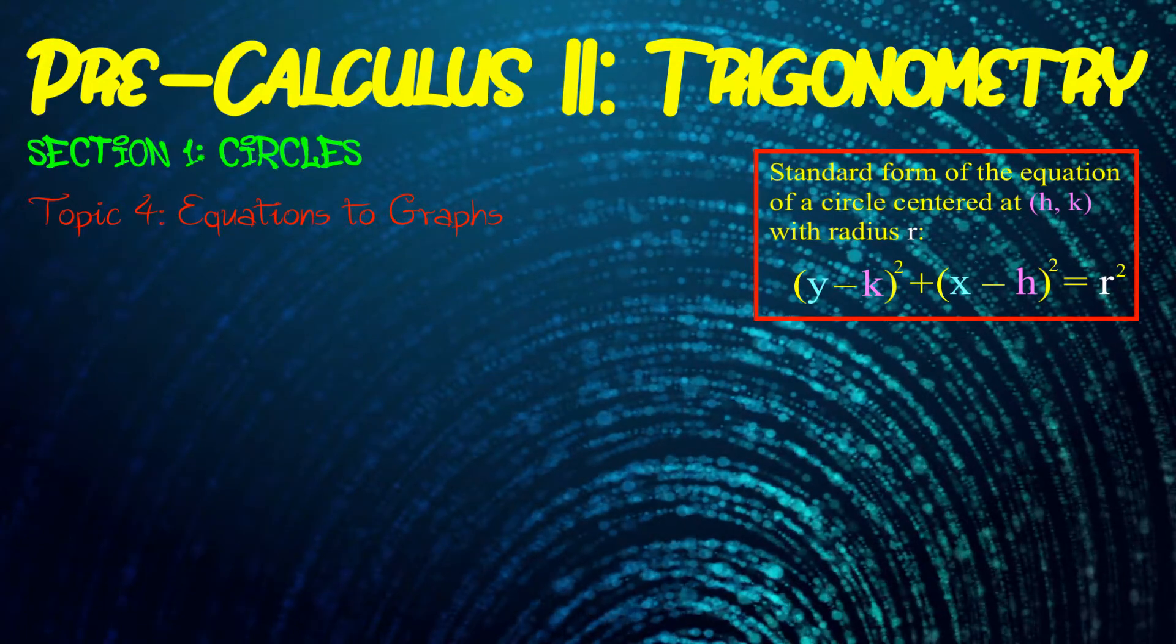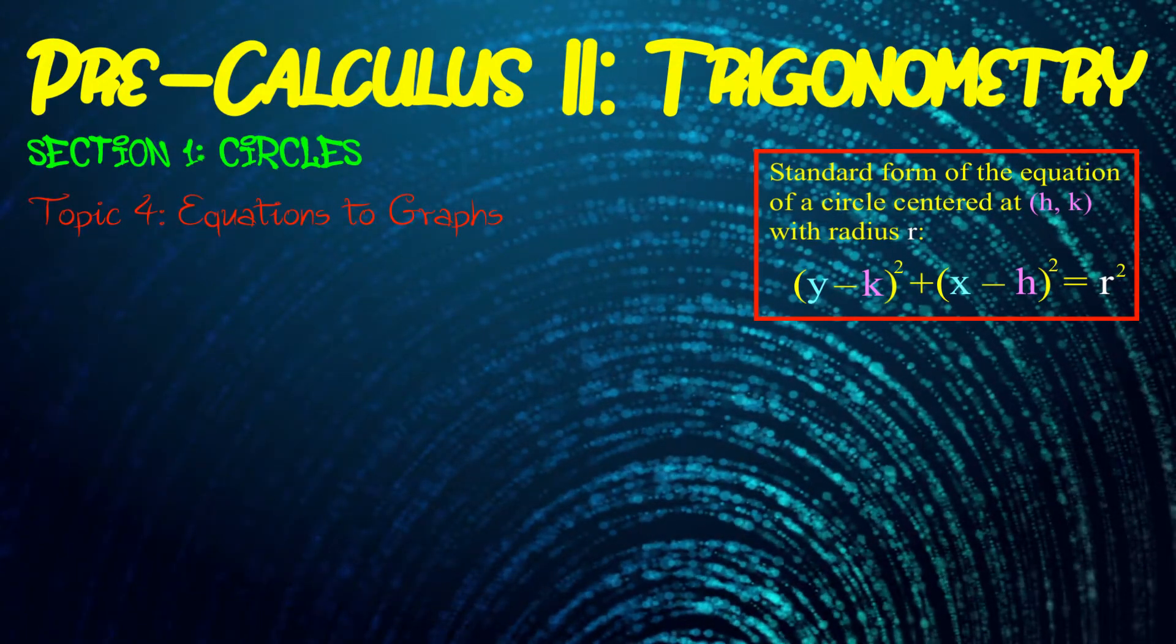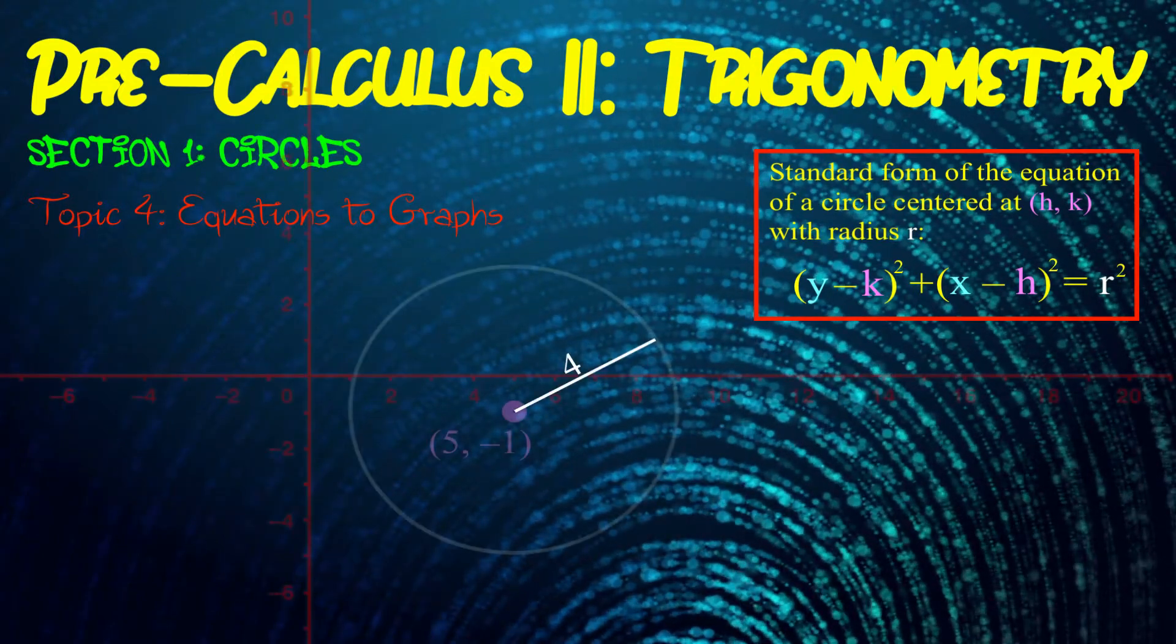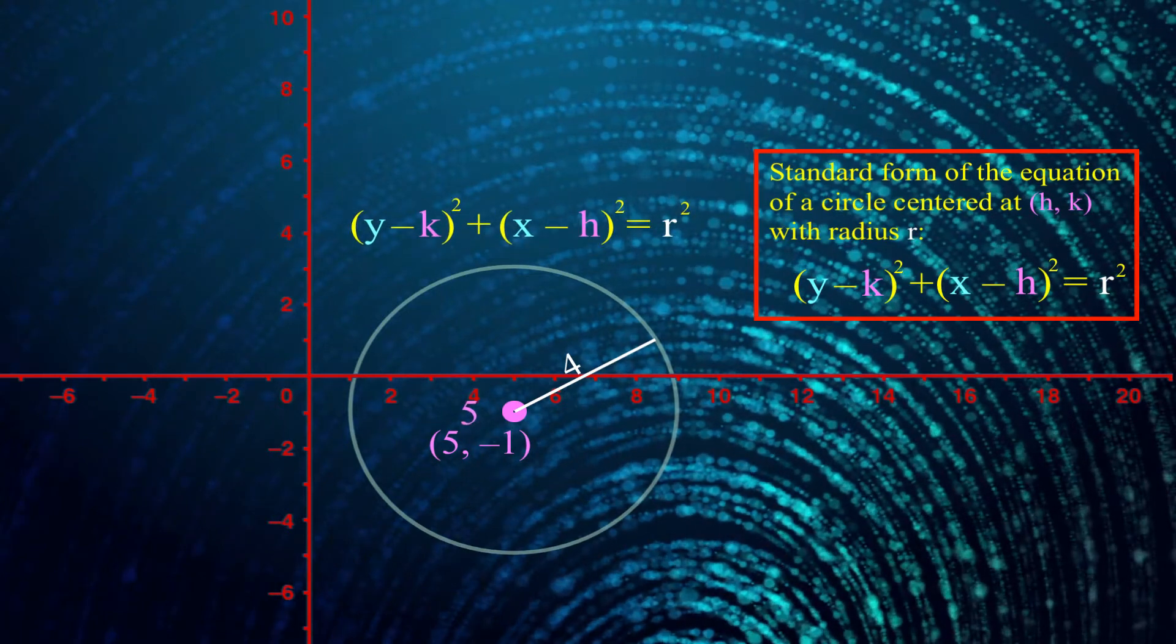And that brings us here to our fourth video, where the stated goal sounds really easy. It's kind of the opposite of what we did in the second video. In the second video, I started you out with the graph of a circle. You identified the center and the radius, and you used that to come up with the equation of the circle.